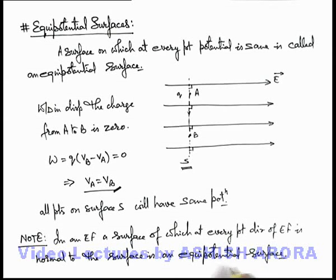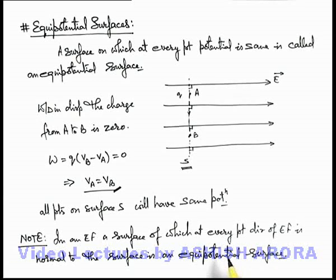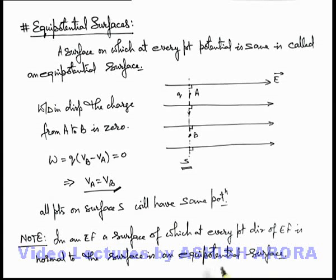Its vice versa is also true: if there is an equipotential surface, then at every point of that equipotential surface the electric field will also exist in the direction normal to it.